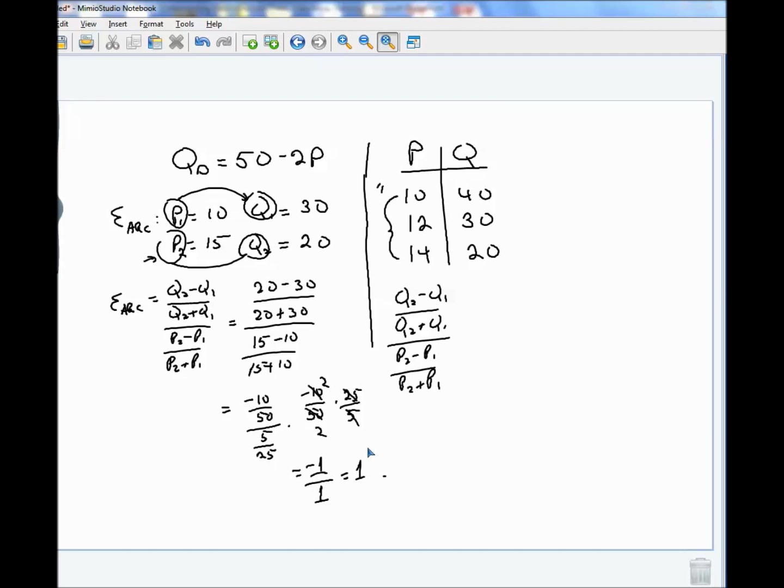So we'll let this be 0.1 and we'll let this be 0.2. So that means Q2 is 20. So it would be 20 minus 40 over 20 plus 40. All over P2 is 14 minus 10 over 14 plus 10. And that's the same as 20 minus 40 is minus 20 over 60 over 4 over 24.